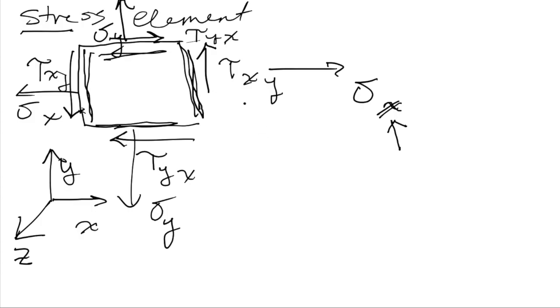Now for the shear stresses, we have two subscripts. The first subscript denotes the face upon which it acts, and the second subscript denotes the direction in which it acts. So this shear stress tau xy acts on the positive x face and acts in the y direction. The convention for shear stress is it's positive if it acts on a positive face in the positive direction of the axis of the second subscript.